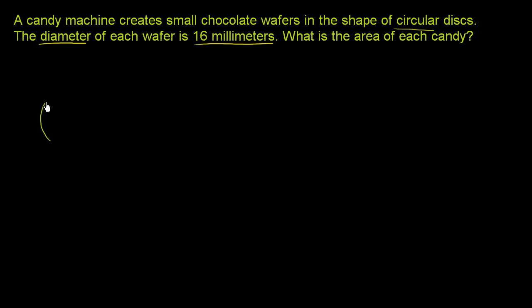So the candy, they say it's the shape of circular disks, and they tell us that the diameter of each wafer is 16 millimeters. So if I draw a line across the circle that goes through the center, the length of that line all the way across the circle through the center is 16 millimeters.